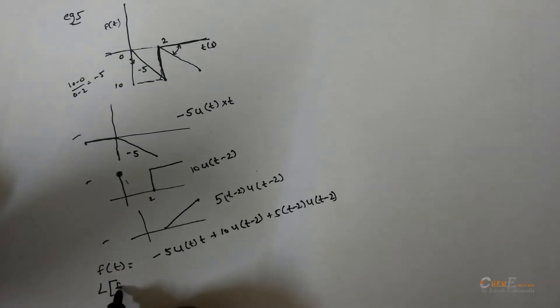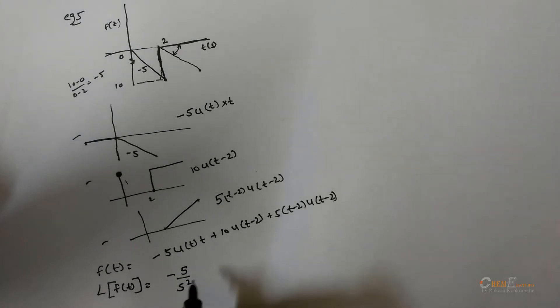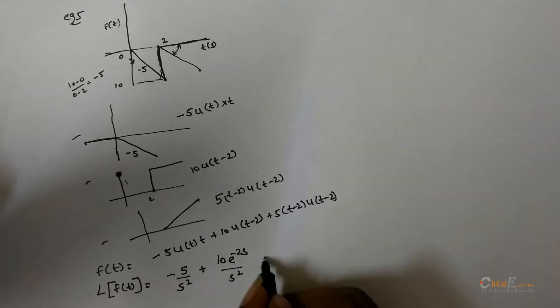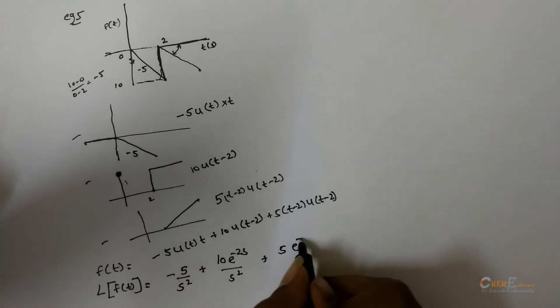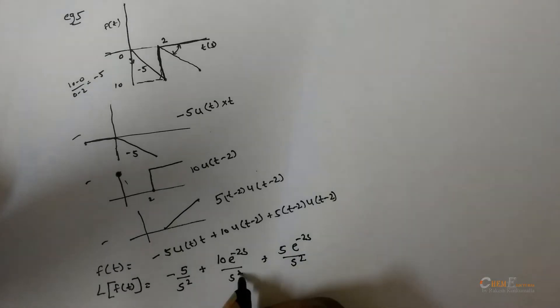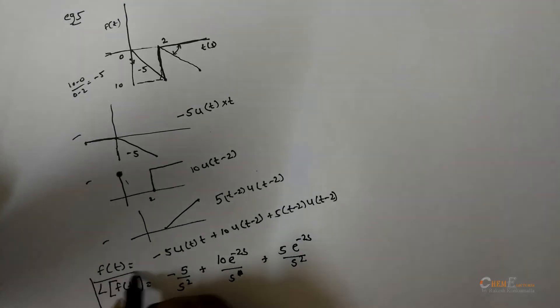The Laplace of f will be minus 5 by s square plus 10 e power minus 2s by s square plus 5 e power minus 2s by s. This is the Laplace for the above signal.